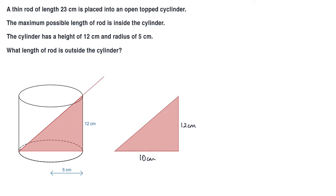Now what we're looking for is this length here, this little bit here. We can find this length, the length that's inside the cylinder, and then we can subtract that from 23.